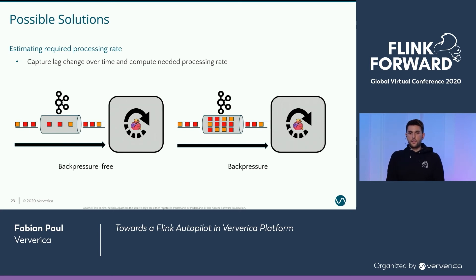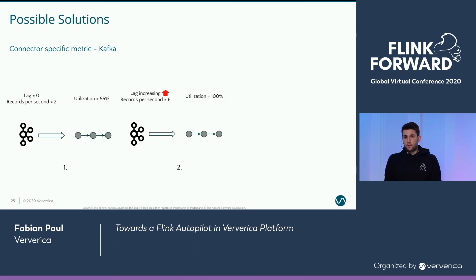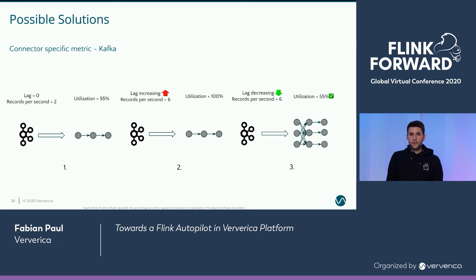We take advantage of this and compute how much we cannot process, combining it directly with our utilization metric to determine how much we need to scale up. Back to the example: records per second is two, lag is initially zero, everything is fine. Then the lag starts increasing and records per second goes to six with utilization at 100%. Since we can see the lag is increasing, we compute how much over time the lag increases — and that is exactly the number we need to scale up by. The application can now detect this and compute the correct parallelism, scaling up by three. Then the lag starts decreasing and the application detects it's fine, because utilization is healthy and we haven't over-provisioned.